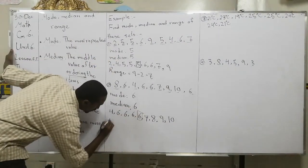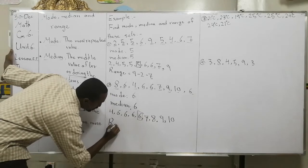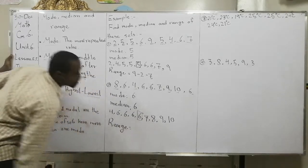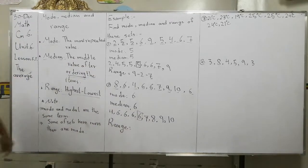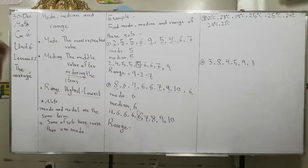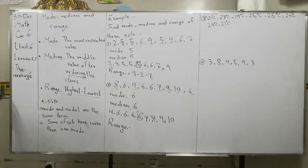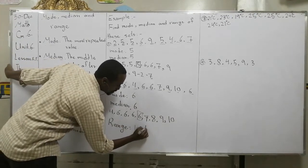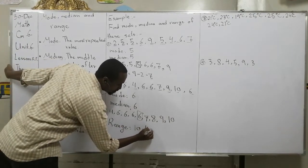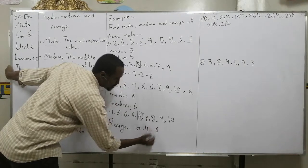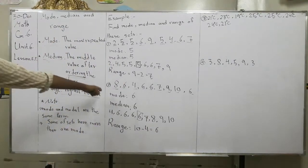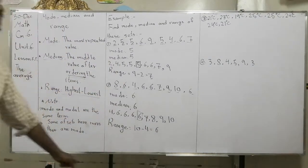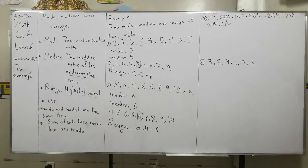Now let's find the range. Highest minus lowest. What is the highest number? Ten. Lowest number? Four. That means ten minus four equals six. So mode, median, and range are all the same number in this example.